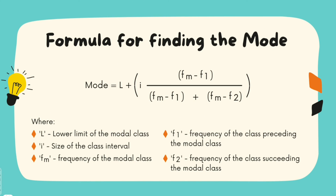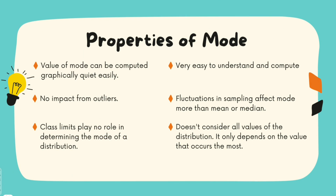How do we find the mode? For a continuous data set, the formula is: lower limit of the modal class + i × (fm − f1) / (2fm − f1 − f2), where i is the class interval width, fm is the frequency of the modal class, f1 is the frequency preceding the modal class, and f2 is the frequency succeeding the modal class. For a discrete data set, it is as simple as finding the frequencies and picking the highest one.